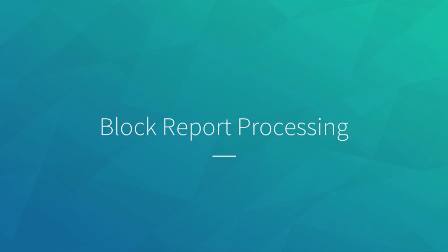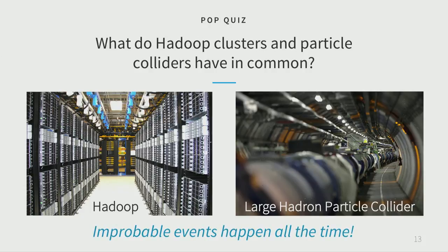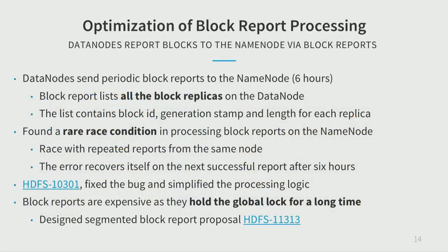Block report processing is another important part of the namenode. There's a pop quiz: what do Hadoop clusters and particle colliders like the LHC have in common? Beyond big size and high speed, the most important thing is that improbable events happen on both all the time — even low-probability events occur frequently due to the scale and speed involved.